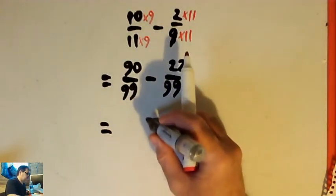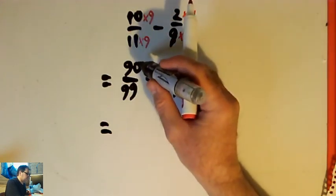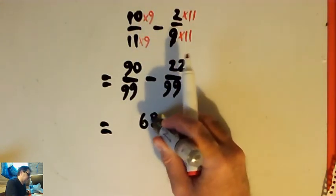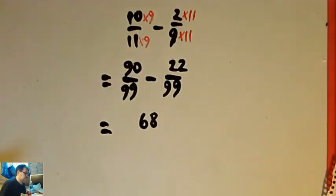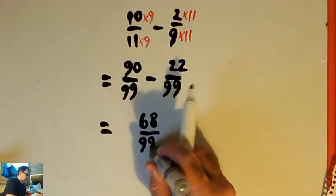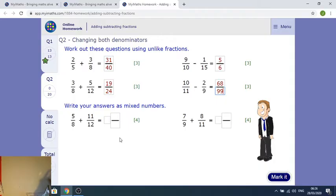So I've got 90 ninety-ninths minus 22 ninety-ninths. I just subtract the tops: 90 minus 22 is 68, and the bottoms stay the same — 99. So that makes 68 ninety-ninths. Filling that in on iMaths: 68 over 99.